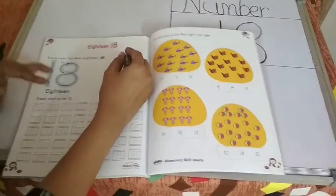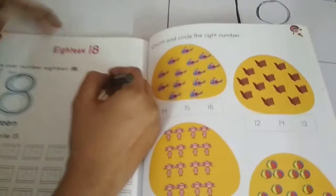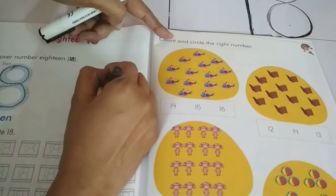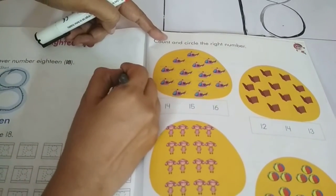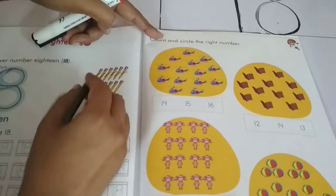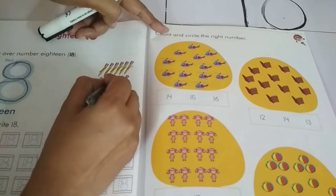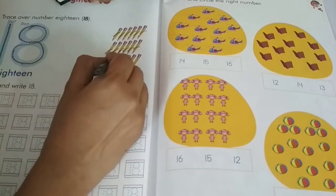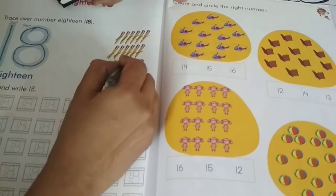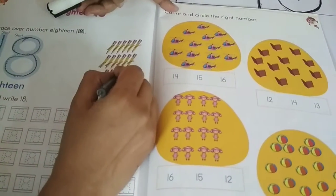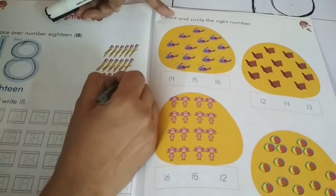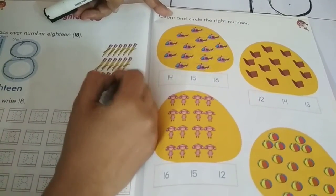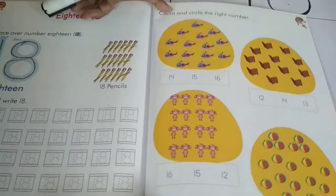Let's count these pencils. Cut and count. 1, 2, 3, 4, 5, 6, 7, 8, 9, 10, 11, 12, 13, 14, 15, 16, 17, 18.